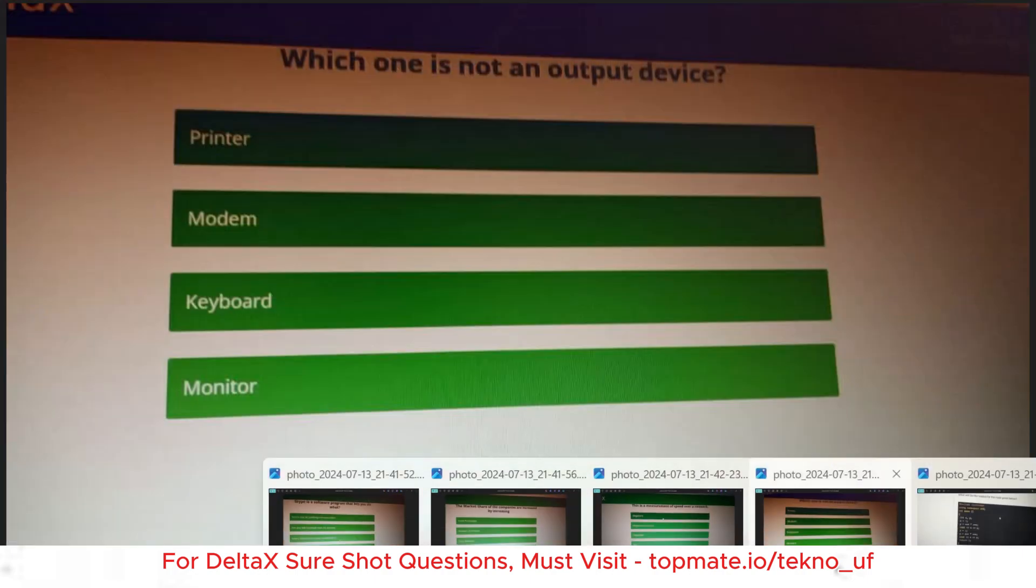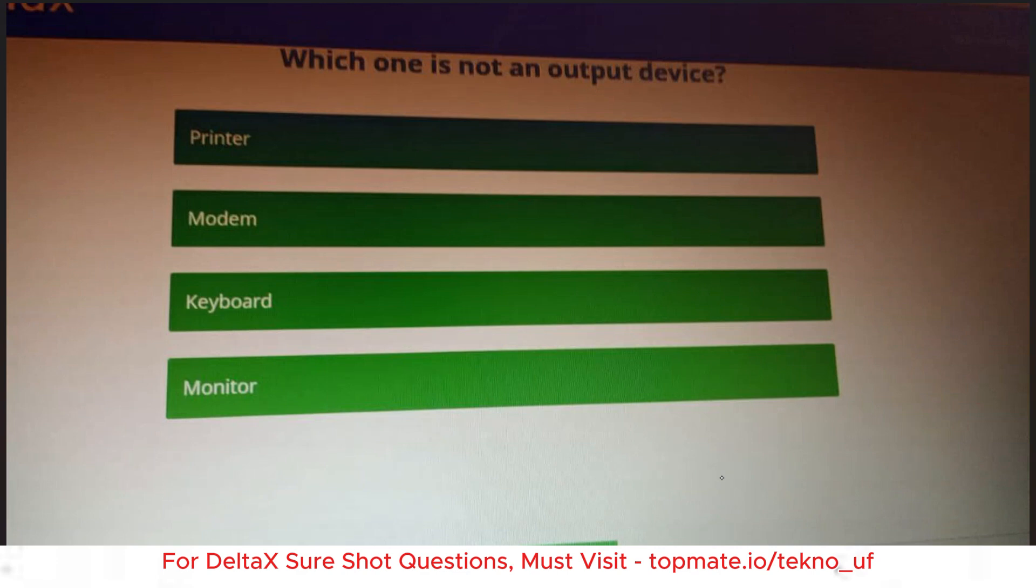The next question is this: Which one is not an output device? Printer, modem, keyboard, monitor. Printer is an output device, modem is an output device, monitor is also an output device, but keyboard is strictly an input device because it gives input to the monitor. The correct answer will be keyboard.